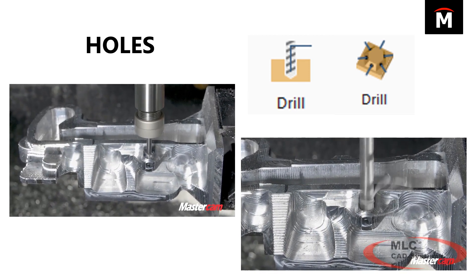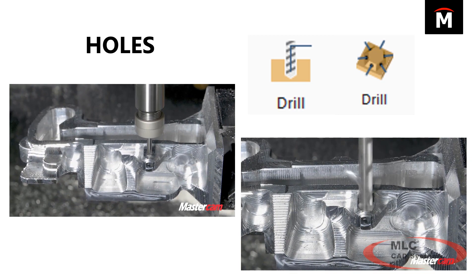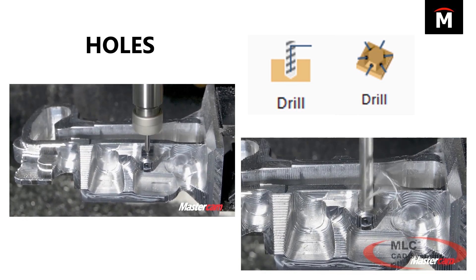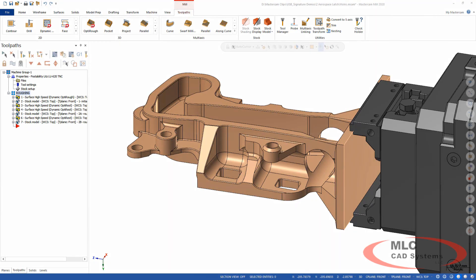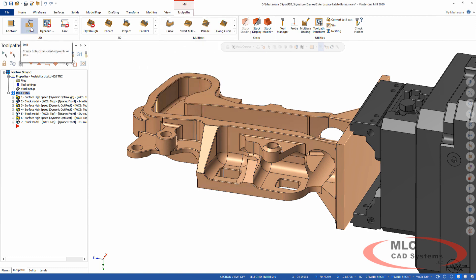If you need to change which direction you drill the hole, drill off center, or do it as a multi-axis, it's just a setting now — not a completely different toolpath. The multi-axis drill toolpath is gone from its old location; it's now over in the 2D area.